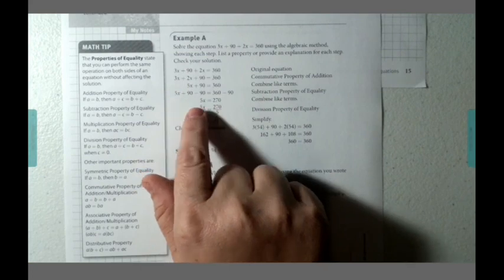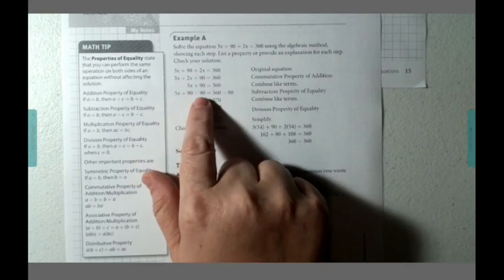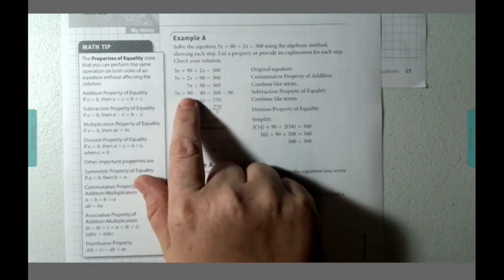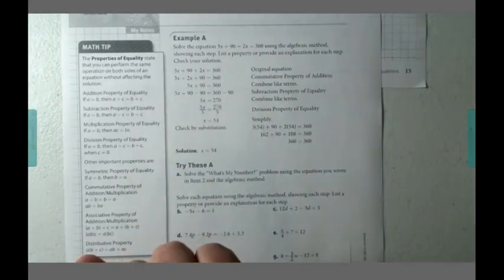Then they need to move this 90 because we're trying to ultimately get x by itself. And in order to do that, we need to move the 90. So we subtract 90 from both sides of the equation using the subtraction property.